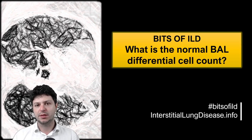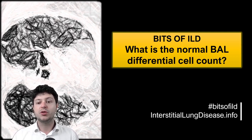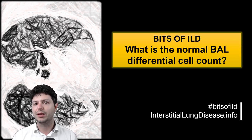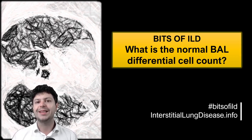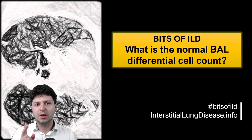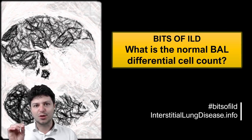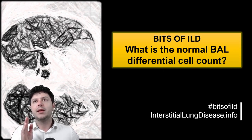This is something that is done frequently, so it's important to know the normal differential cell count. It's useful for other conditions as well, but generally for interstitial lung disease, the bronchoalveolar lavage differential cell count is very important. It answers a very important question for the management of your patient's condition.